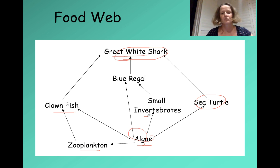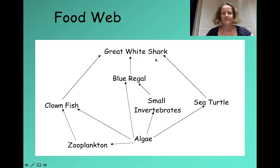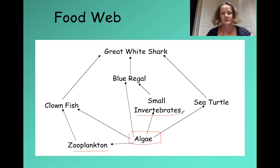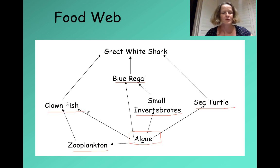Algae is eaten by small invertebrates, which are eaten by the blue regal — that's Dory — and then that's eaten by the great white shark. The algae is our producer. We have a number of different herbivores: zooplankton eat algae, small invertebrates are herbivores, Dory is a herbivore, the sea turtle is a herbivore, and the clownfish — Nemo — eats algae, so Nemo is a herbivore.